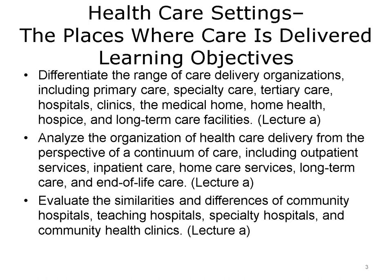The objectives for this unit, Health Care Settings, the Places Where Care is Delivered, are to differentiate the range of care delivery organizations, including primary care, specialty care, tertiary care, hospitals, clinics, the medical home, home health, hospice, and long-term care facilities.